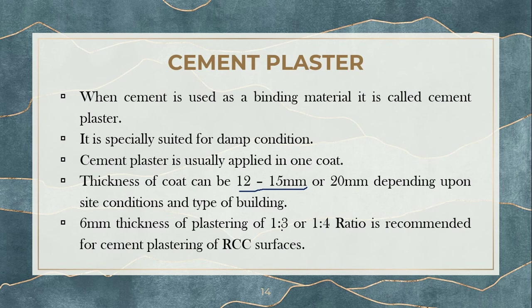For RCC surfaces — if you are plastering a roof, floor, or any reinforced concrete structure — a 6 mm thickness of plastering with a proportion of 1:3 or 1:4 is recommended. That means one part cement to three parts sand, or one part cement to four parts sand. This is the cement plaster we see regularly.